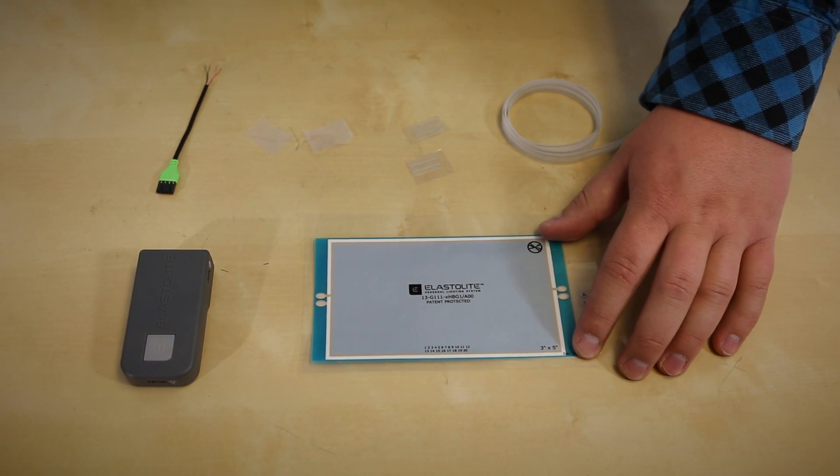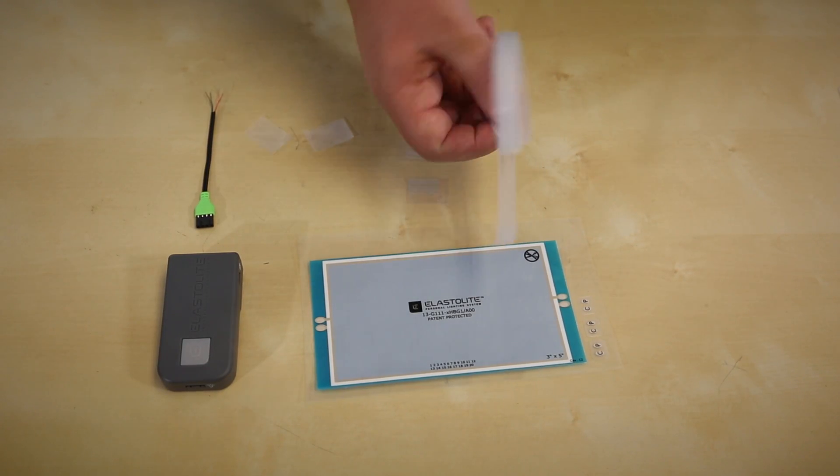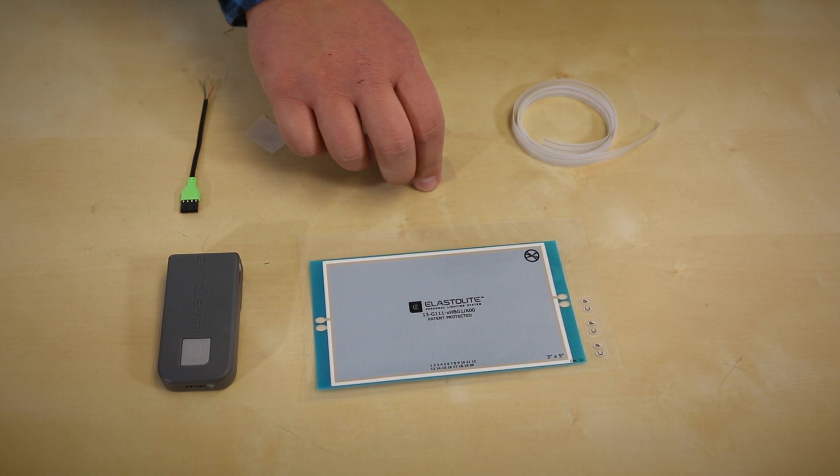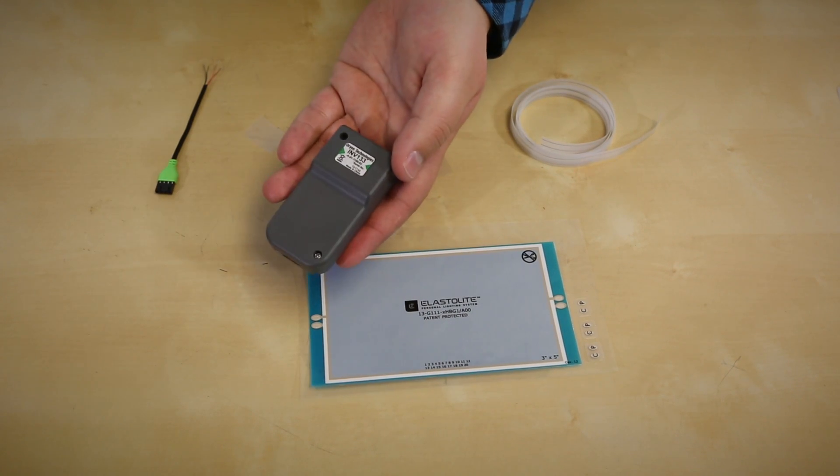For this we're just going to use the 3x5 Elastolite lamp prep, the 3 feet of iron-on circuitry, the two straight connectors with the two pieces of iron-on tape, the molex connector with the exposed wires, and of course the INV-133.